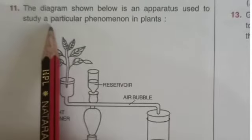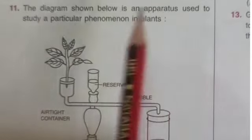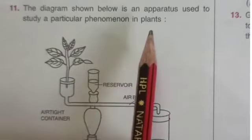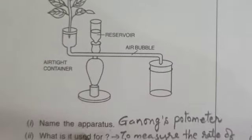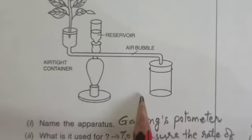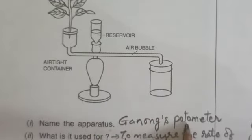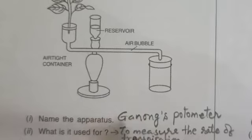Question 11: the diagram shown below is an apparatus used to study a particular phenomenon in plants. First, name the apparatus — it is Ganon's potometer. It is used to measure the rate of transpiration.